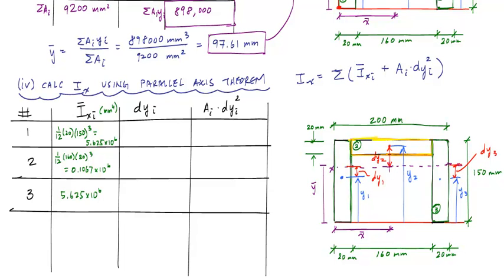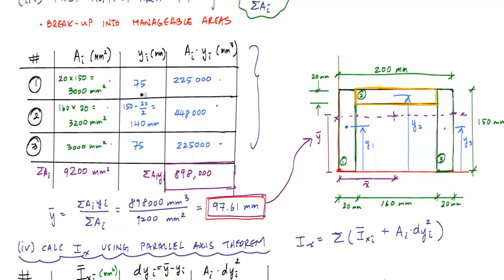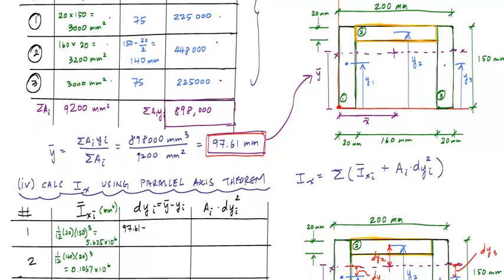And instead of trying to calculate that all out again, what that really is is this is just Y bar minus YI. And so all you got to do is remember that this right here was Y bar 97.61. So the DY1 would be 97.61 minus Y1, which we had previously calculated up here, which was 75 millimeters. And this comes out to 22.61 millimeters.